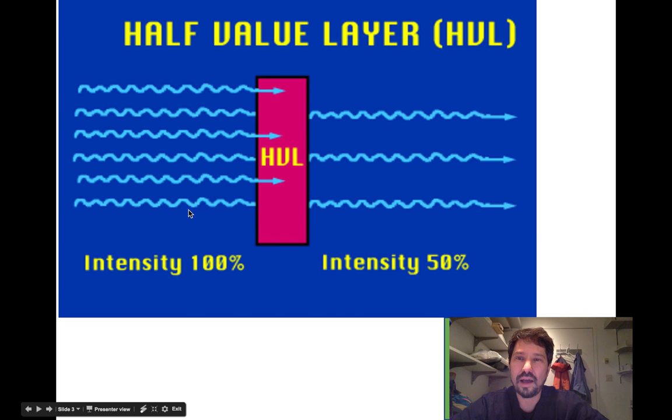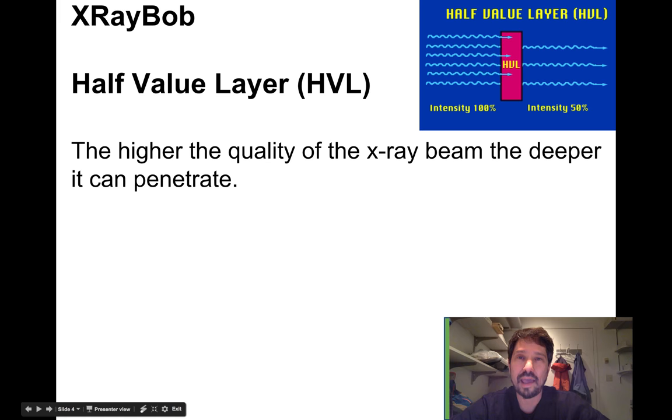So here we see 100% intensity on one side, we're transmitting through a half value layer, and we end up with 50% on the other side. It's the thickness of a material that will cut the beam intensity in half.